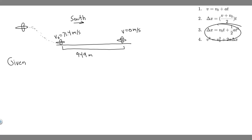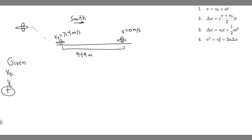There are basically five kinematic variables: v sub zero, which is initial velocity; v, which is final velocity; t, which is time; delta x, which is the change in position; and acceleration, a. These are the five variables used to solve kinematic equations.